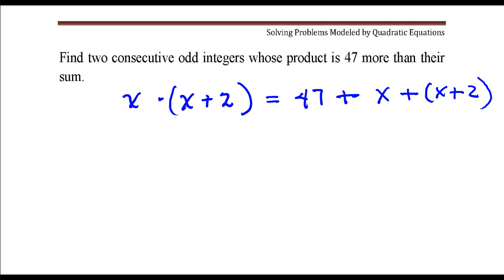So all we need to do is solve this equation. I'll distribute here first, so this is going to be x squared plus 2x is 49 plus 2x.